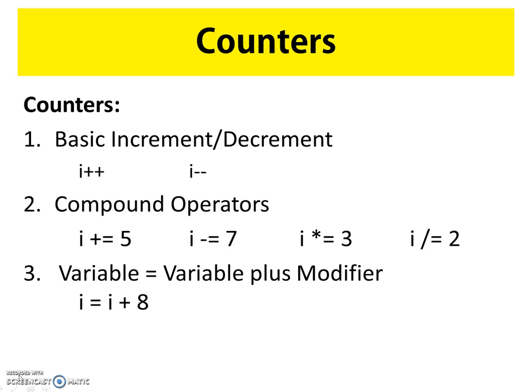There are three basic types of counter modification. The first is the basic increment or decrement: 'i++' increments the counter by one, and 'i--' decrements it by one. Second, we can use compound operators learned in a previous module. Third, we can use the longer form: 'i = i + 8', though this can easily be converted to a compound operator. These are the three ways to modify your counter.